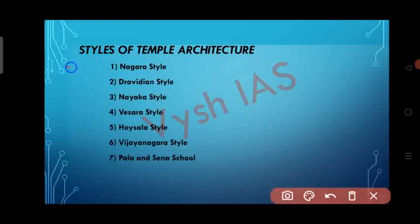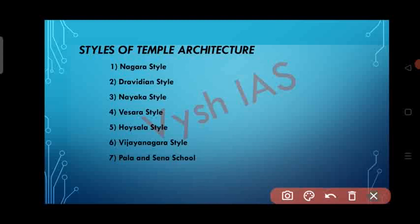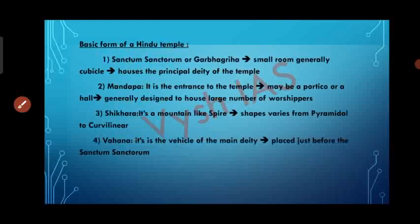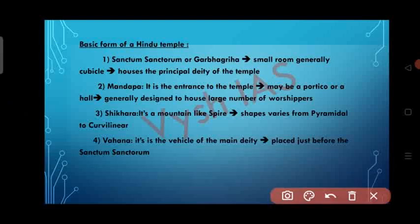Now let's see the styles of temple architecture. Nagara style, Dravidian style, Nayaka style, Vesara style, Hoysala style, Vijayanagara style, and Pala and Sena school are the different styles of temple architecture. Before knowing about the styles, let's look at the basic form of a Hindu temple: Garbagriha, Mandapa, Shikara and Vahana — these four are the basic forms of a Hindu temple.